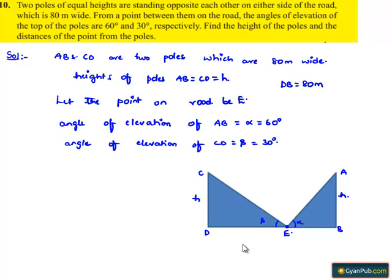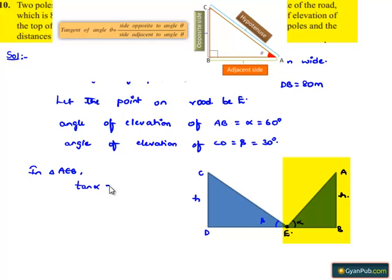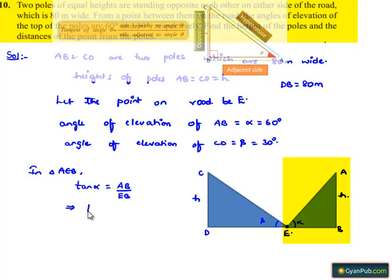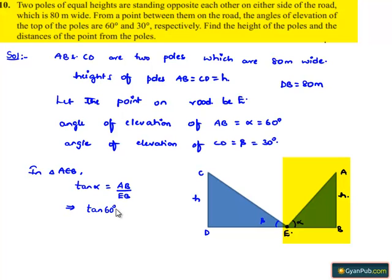We need to find the height of the poles and the distance of point E from each pole. In right angle triangle ABE, considering the trigonometric ratio tan, we get tan alpha equals opposite side AB divided by adjacent side EB. That implies tan 60 degrees equals H divided by EB, which gives EB equals H by root 3. Let this be equation number 1.